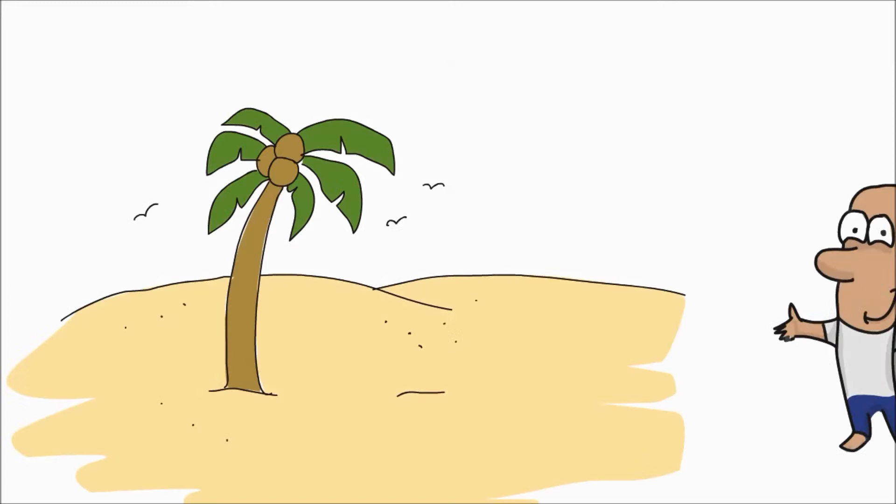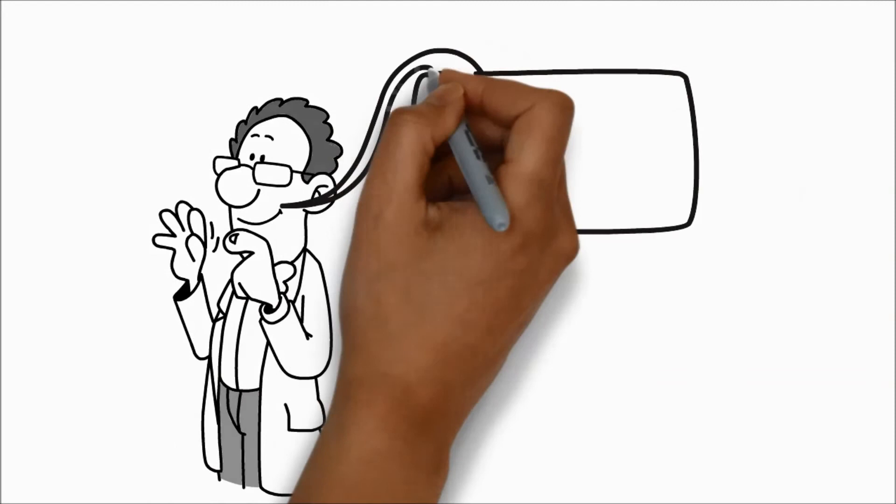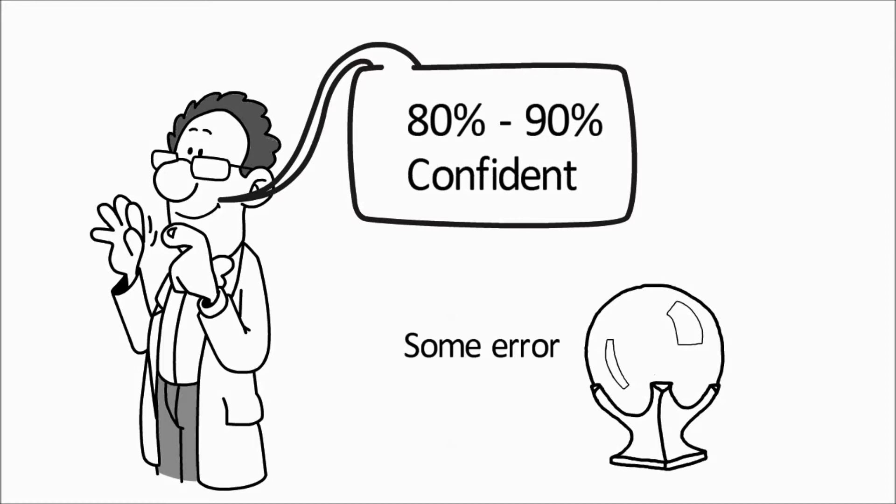But even the best models can't predict the weather with 100% accuracy, and the same applies with fisheries stock assessments. So scientists will usually say they are 80 or 90% confident something will happen, but there will always be some error when predicting the future.